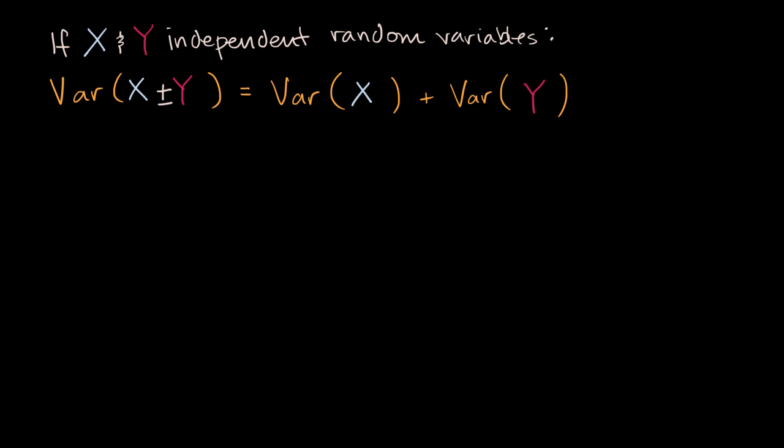In previous videos, we talked about the claim that if I have two random variables, X and Y, that are independent, then the variance of the sum or difference of those two random variables is going to be equal to the sum of the variances. So if you have independent random variables, your variation is going to increase when you take a sum or a difference, and we've built a little bit of intuition there.